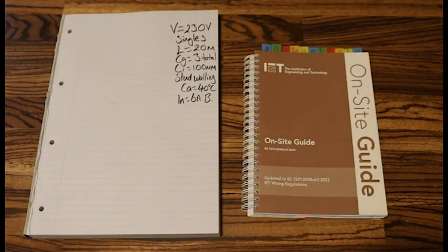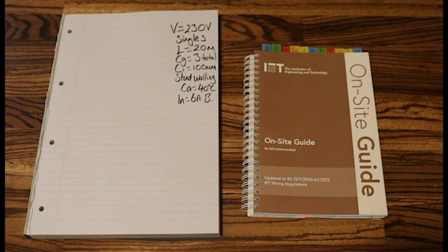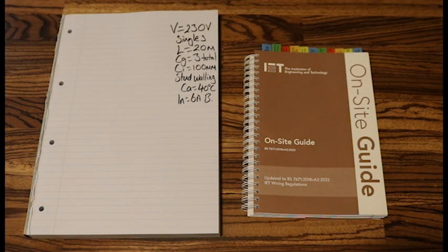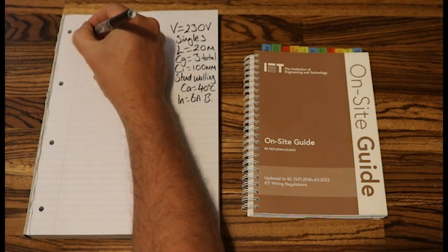Okay, so we've got all of the information that we are going to need, so let's get started on our cable calculation. Now remember, if you have gone onto the website and purchased the cable calculation guide, we're going to be starting on guide number, or step number one, and we'll go through to step number eight. So let's get started with our first one. What do we do first? We work out IB, don't we?